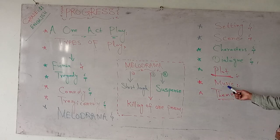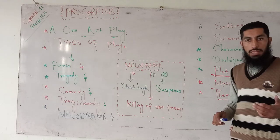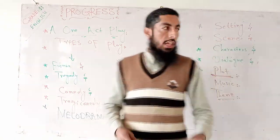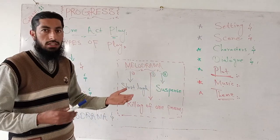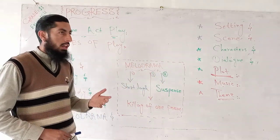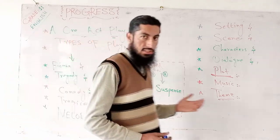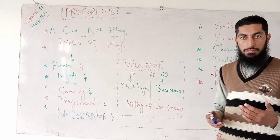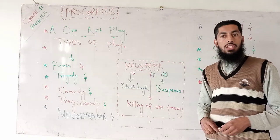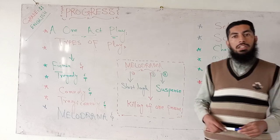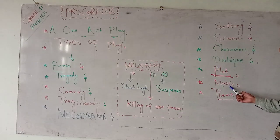Next comes music. Here, music doesn't mean blowing pipes or flutes. Music here means the tune of the speakers — for example, whether the character is in an aggressive mood, talking aggressively or angrily, or he is in a jolly mood. This way of speaking, this tune, is called music.